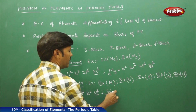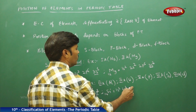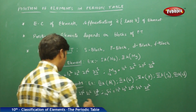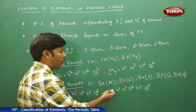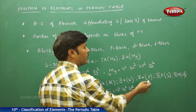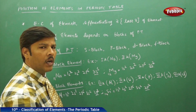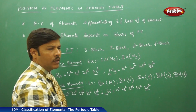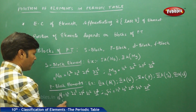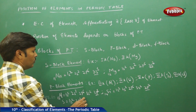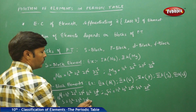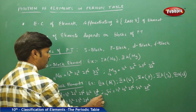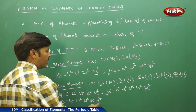For silicon (atomic number 14): 1s², 2s², 2p⁶, 3s², 3p². The 14th differentiating electron enters the 3p orbital, so silicon belongs to the p-block. For sulfur (atomic number 16): 1s², 2s², 2p⁶, 3s², 3p⁴. The 16th electron also enters the 3p orbital, confirming sulfur as a p-block element.